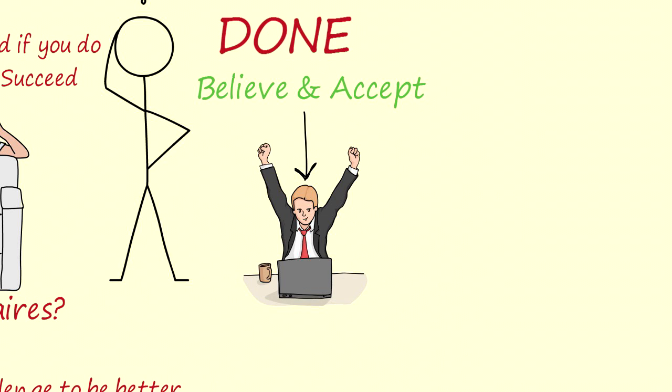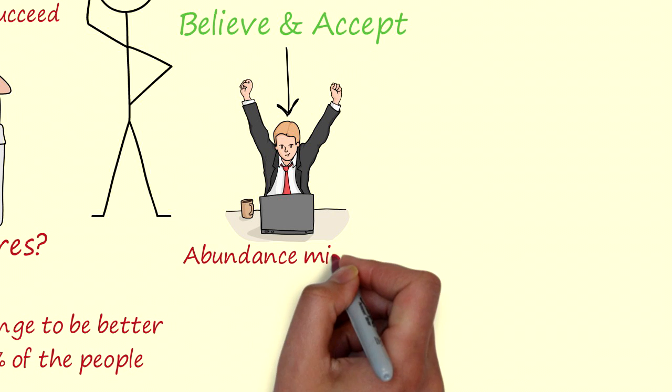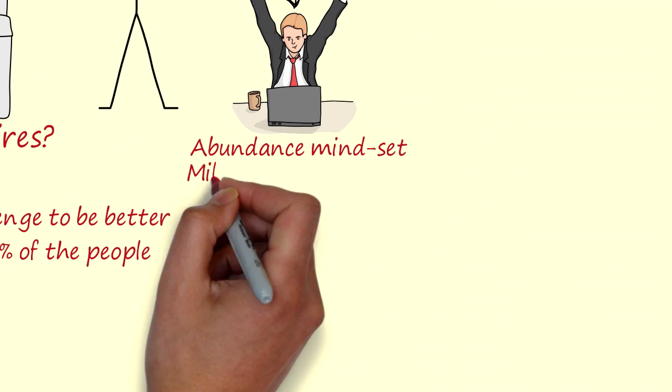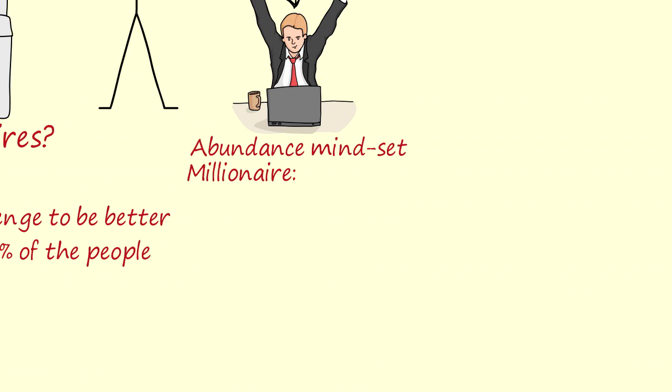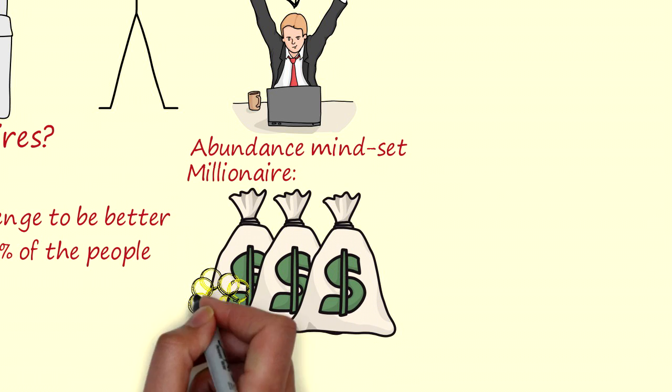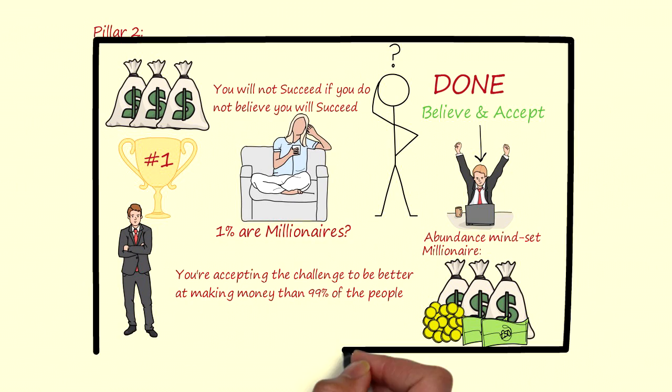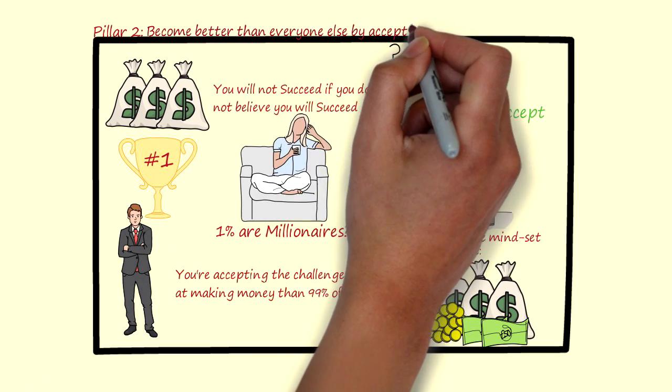So how do you do this? You need to adapt an abundance mindset. Actions are controlled by mindsets and beliefs. It is impossible for you to become a millionaire without believing that money is abundant. If you are not willing to risk it all, then you simply don't want it badly enough. If you don't want it badly enough, then you will never achieve it. So the second pillar of wealth: become better than everyone else by accepting an abundance mindset.